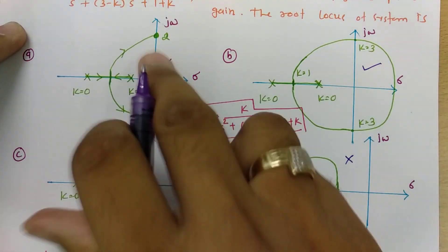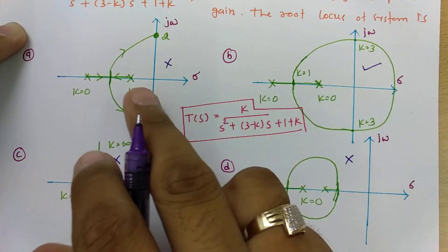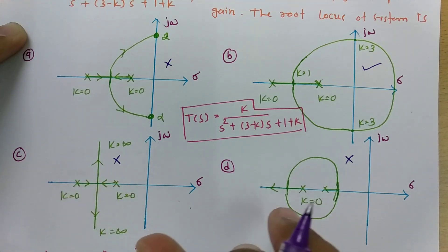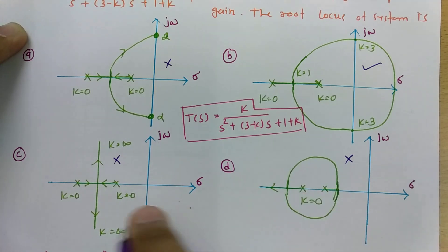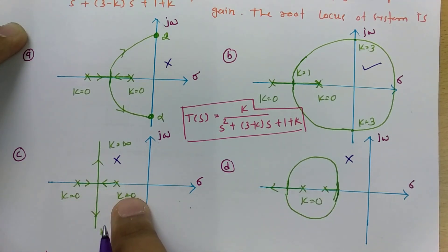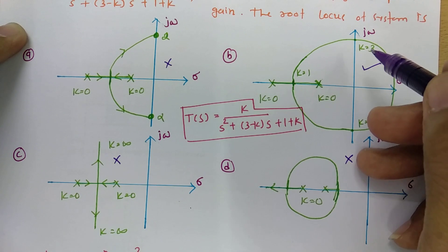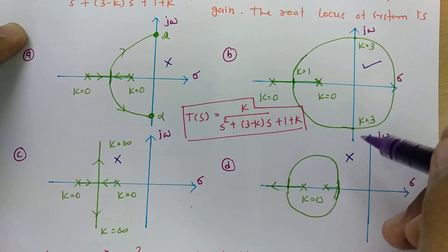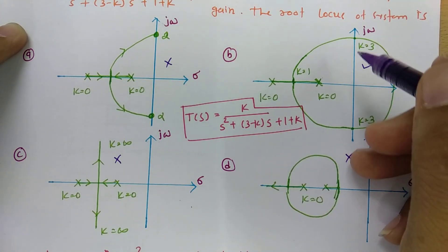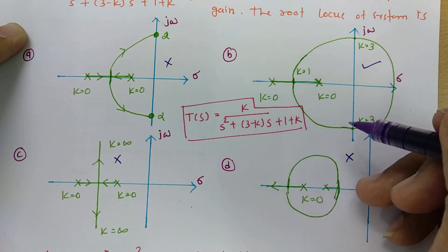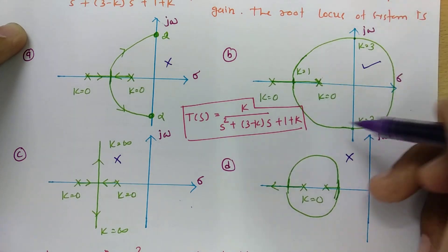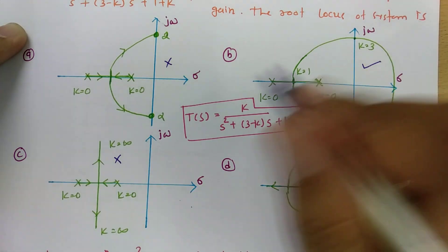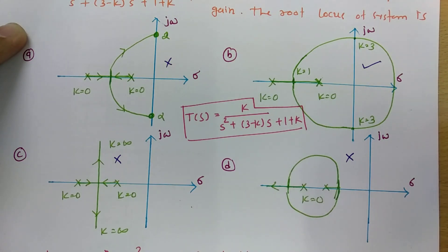To summarize: I examined all four root locus diagrams and placed k equals 0 to check whether roots are different — all four had different real roots, so that was inconclusive. But when I placed k equals 3, the roots occurred on the imaginary axis at plus or minus j2. Only one diagram has that intersection with the imaginary axis, making it the correct root locus. The other diagrams lack that intersection.